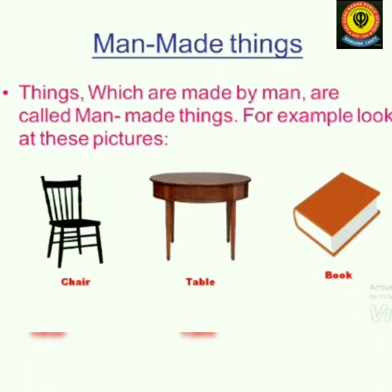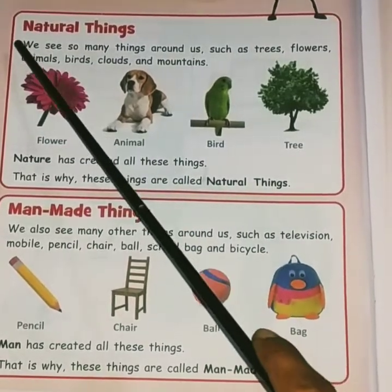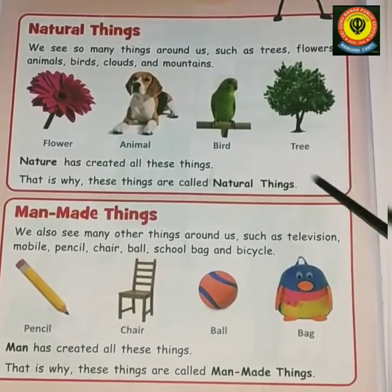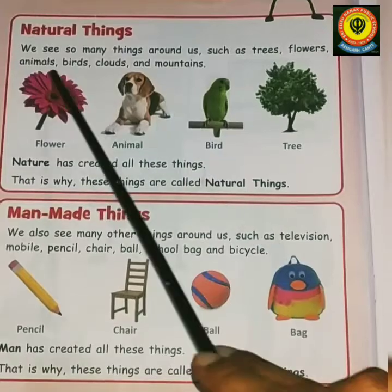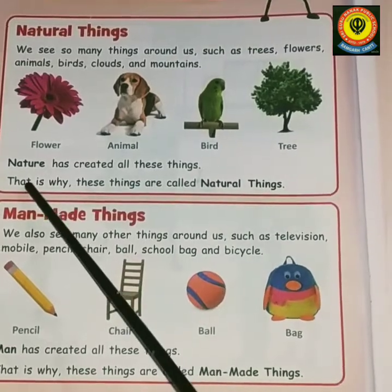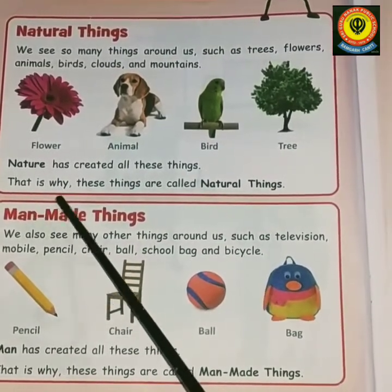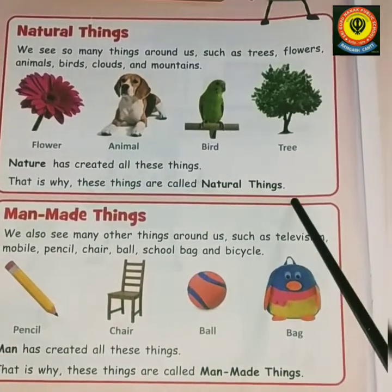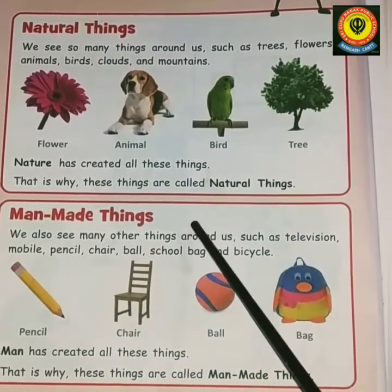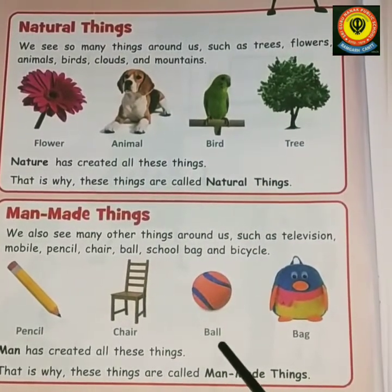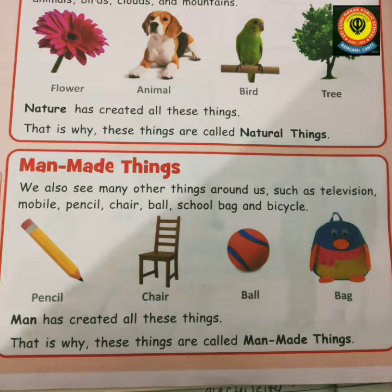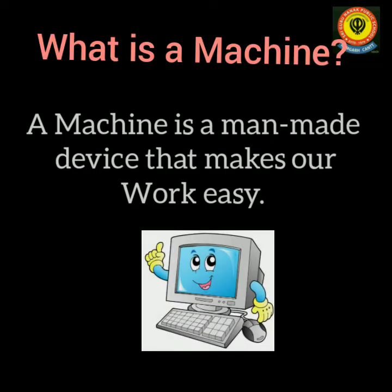We see so many things around us such as trees, flowers, animals, birds, clouds, and mountains — nature has created all these, so they are called natural things. Man-made things include pencils, chairs, balls, and many more — all made by man. Next, we come to machines.